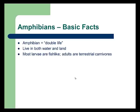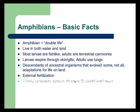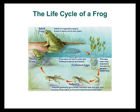Amphibian means 'double life' — they live in water as larvae and then become terrestrial carnivores as adults. As larvae they respire through skin and gills; as adults they develop lungs. They're descendants of organisms that made the transition from water to land. They use external fertilization, meaning sperm and eggs are deposited outside of the female. They also use a closed circulatory system, but this time with a three-chambered heart — we'll discuss chamber efficiency in class.